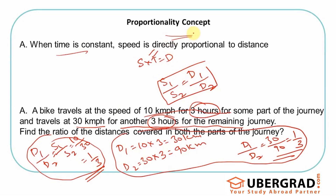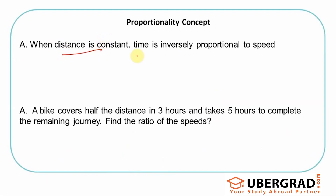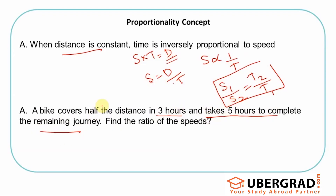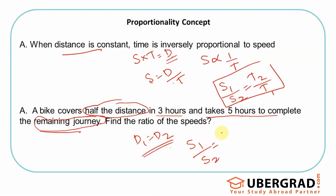The last case is when the distance is constant. We've covered speed being constant and time being constant. If distance is constant in s × t = d, then speed and time are inversely proportional. That means s1 by s2 equals t2 by t1 — the ratio of speeds is the reverse of the ratio of times. For example, a bike covers half the distance in three hours and the remaining half in five hours. Both parts cover the same distance, so the ratio of speeds is the reverse ratio of times.